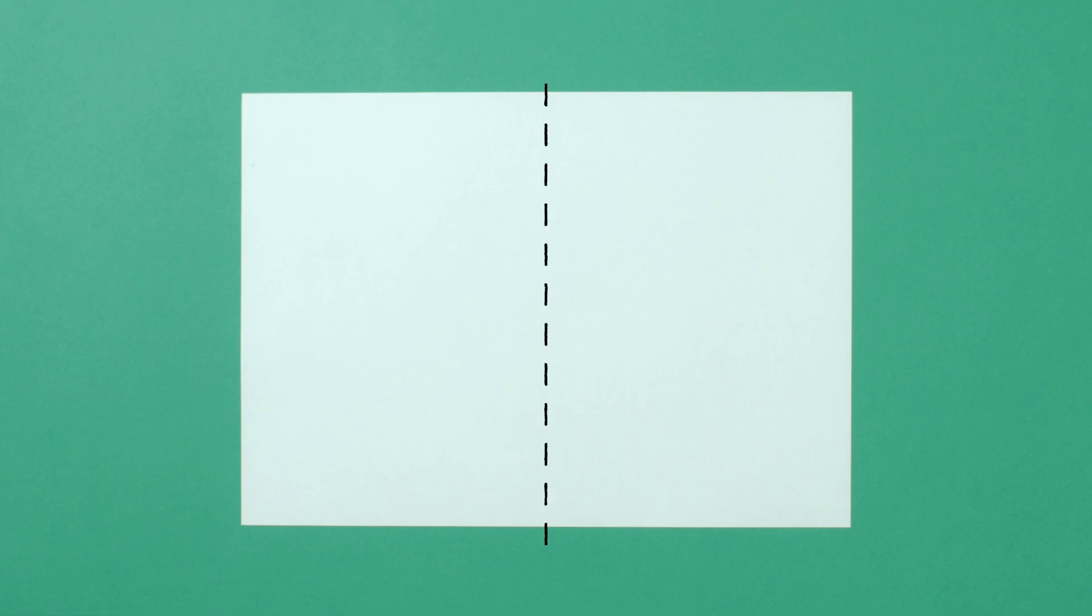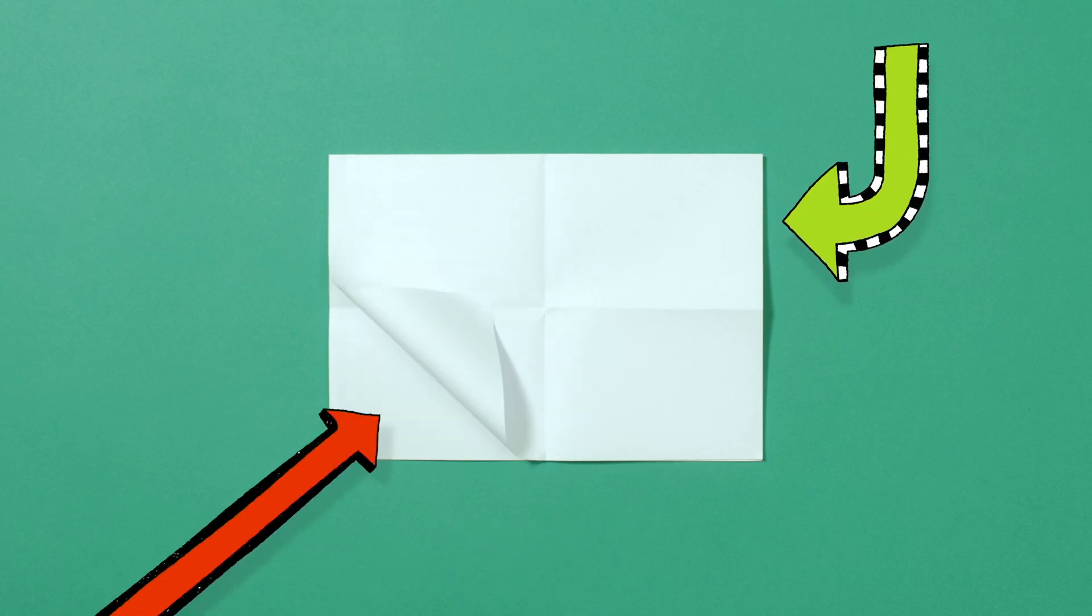Take your paper, fold it in half, then half again, and then half again. Now, unfold the paper so it's only been folded once. Important bit! Make sure the paper is folded just like this.